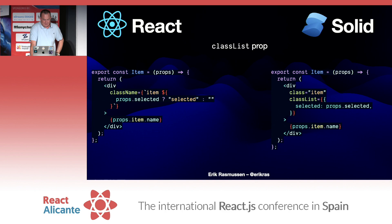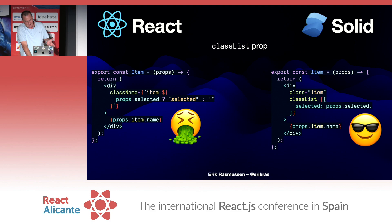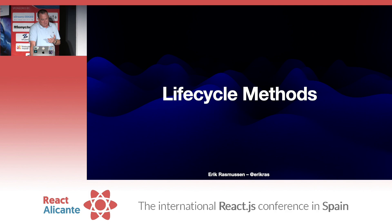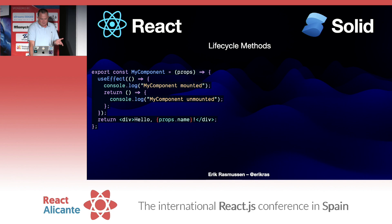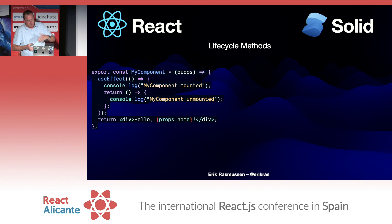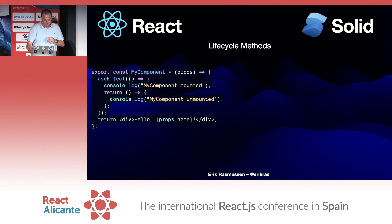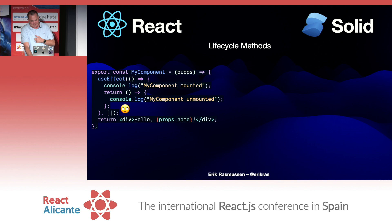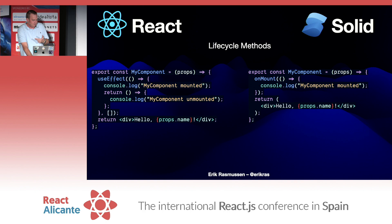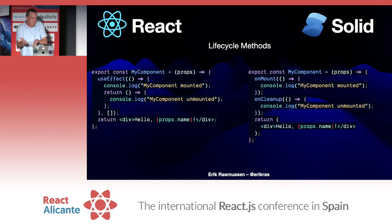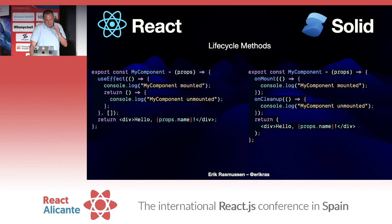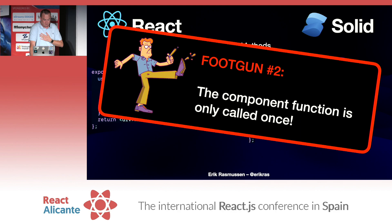Lifecycle methods: say we want to run some code on mount and unmount. In React, you use useEffect and log something on mount with a cleanup function for unmount — except this will run on every render if you forget the dependency array. In Solid, there's a function called onMount and a function called onCleanup, and you just give the tasks there. You can give as many of these as you want, call functions that call these, and they're all queued. And of course you only have to do this once because the component function only calls once. No dependency array needed.